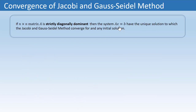Now, if you are given any system of linear equations Ax = b where A is the coefficient matrix, and if A is strictly diagonally dominant, then the given system has a unique solution. Furthermore, if you apply Jacobi or Gauss-Seidel method to find the approximate solution, it should converge to that unique solution.